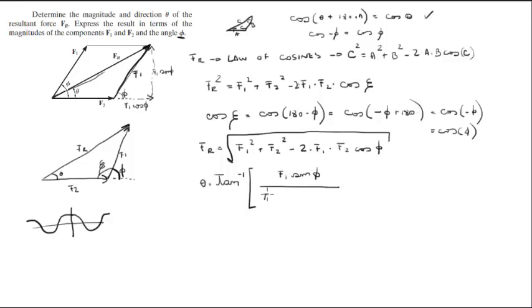Which is this whole thing, which is F2, this line right here, plus this little guy right here, F1 cosine of phi. So now we got theta in terms of F1, F2 and phi as well.